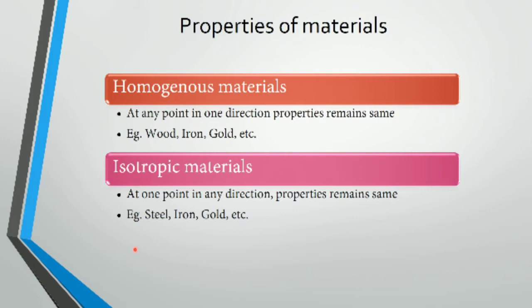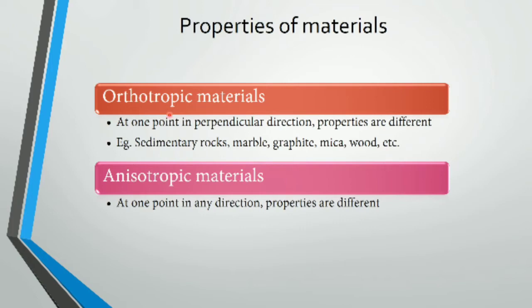The next type is orthotropic materials and anisotropic materials. In anisotropic materials, properties are different — unlike homogeneous and isotropic where properties are the same. For orthotropic materials, we consider two perpendicular directions at one point, and properties are different in those perpendicular directions.